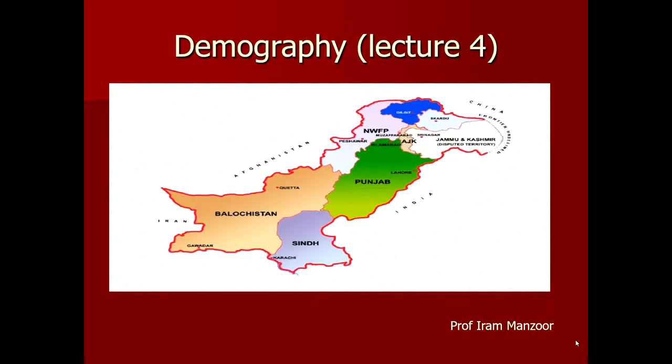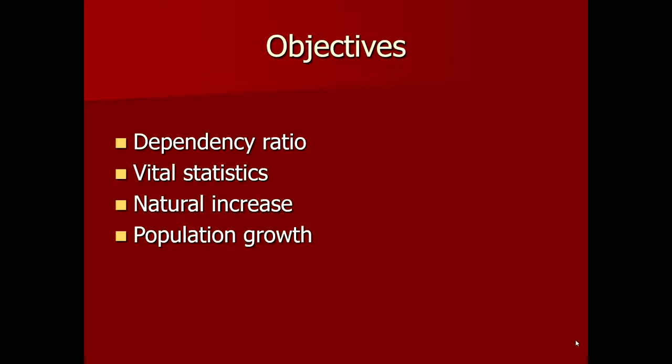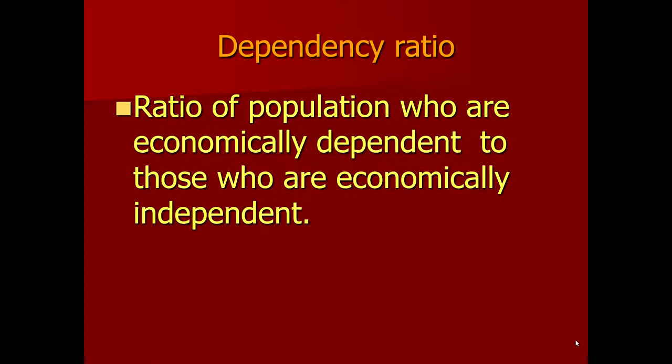Today we are going to start with the fourth lecture of demography. In this lecture we will be covering dependency ratio, vital statistics, natural increase in population, how the population grows, and how we can calculate growth rates of population. So let's move towards the dependency ratio. Dependency ratio is defined as the ratio of population who are economically dependent to those who are economically independent.